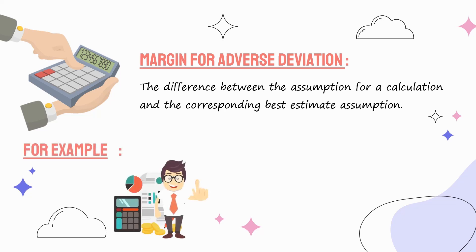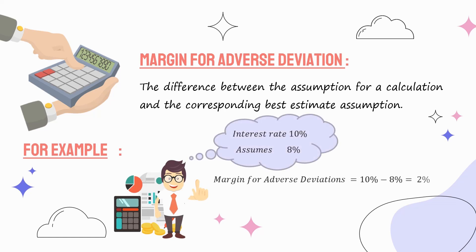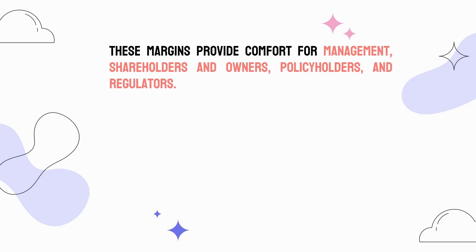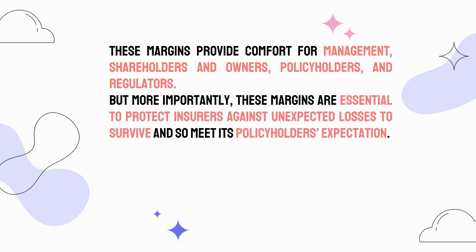The margin for adverse deviation is the difference between the assumption for a calculation and the corresponding best estimate assumption. For example, if the actuary expects the interest rate to be 10% and assumes 8%, then the margin for adverse deviations is 2%. These margins provide comfort for management, shareholders, owners, policyholders, and regulators, and are essential to protect insurers against unexpected losses.